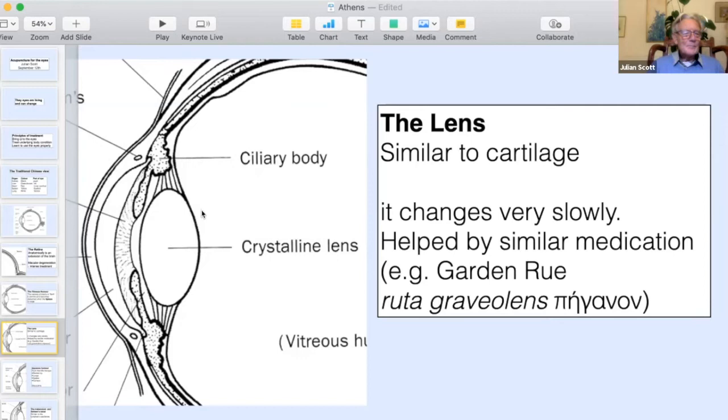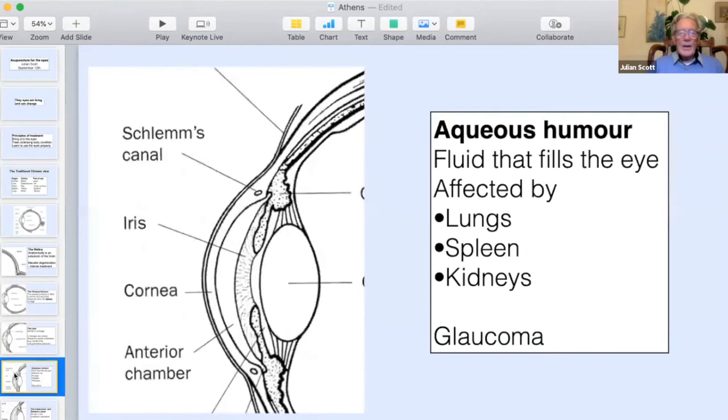Going further forward, the aqueous humor is what fills the front part of the eye, between the lens and the cornea at the front. It's a fluid, and just like all fluids, it's affected by the lungs and the spleen and the kidneys, those three organs. And one of the biggest problems that happens with the fluids is that the pressure becomes too high. And you give rise, first of all, to high intraocular pressure, and then glaucoma. So, you think of glaucoma as just being a kidney problem. No, it's also a lung problem, also a spleen problem. When you have a patient with glaucoma, look at those three organs, there's always something going wrong with one of those organs.